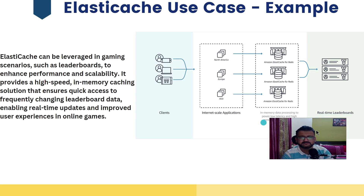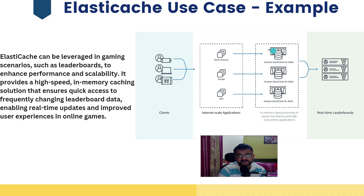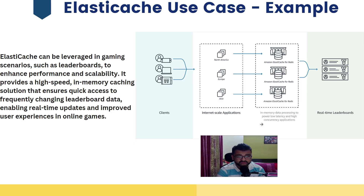A good use case is a gaming leaderboard, where clients from different regions access a game console and the backend is ElastiCache for Redis, running in-memory for low latency and high concurrency. For example, in a live car race with 50 participants across the globe, you need to display the leaderboard — who's first, who's second — in real time. That can be done through in-memory processing very quickly, given the need for fast response time.